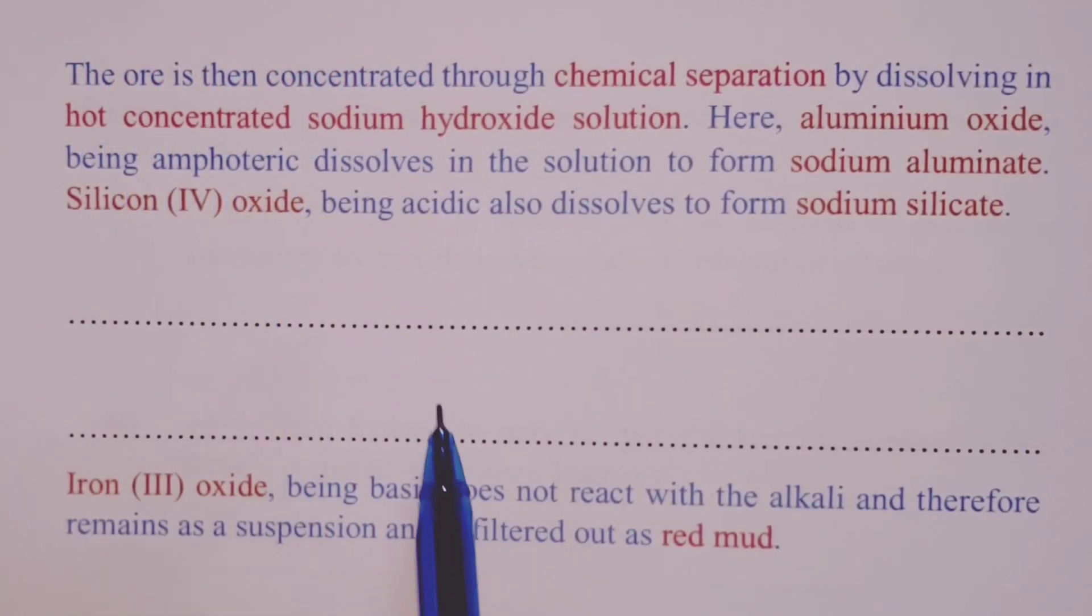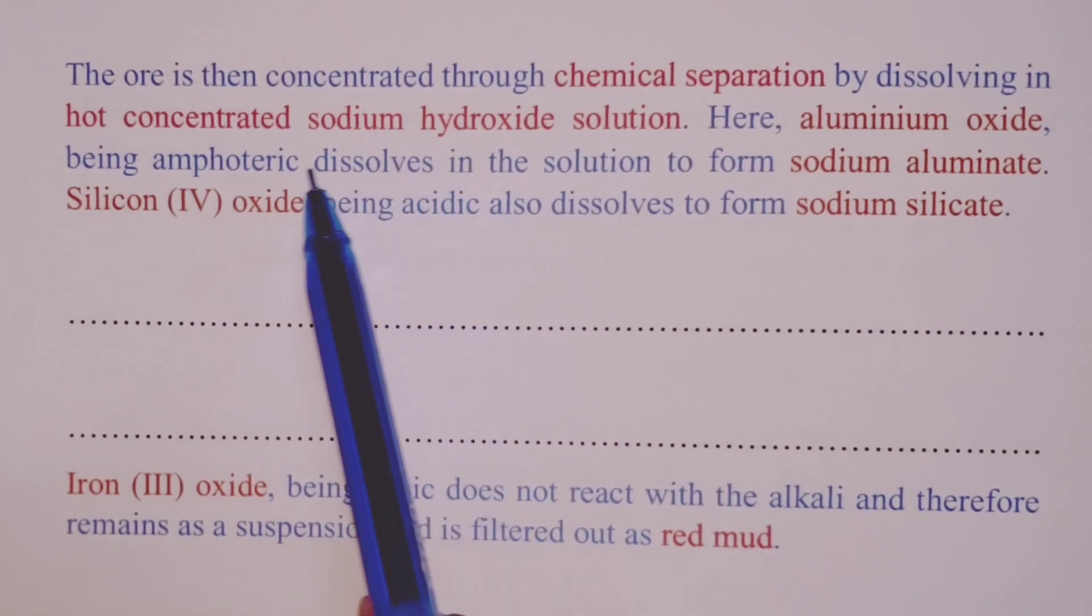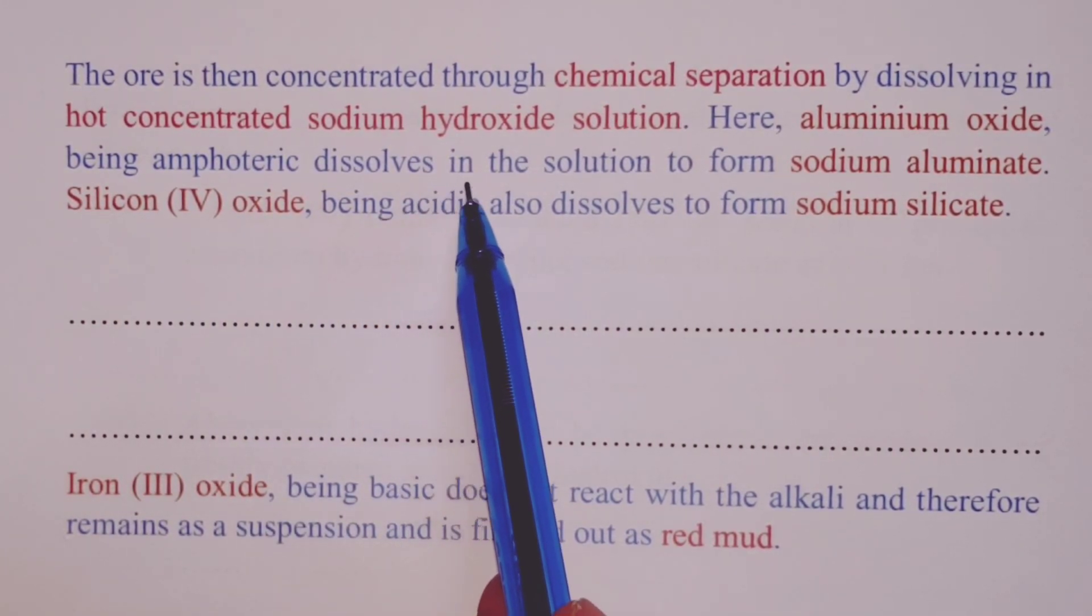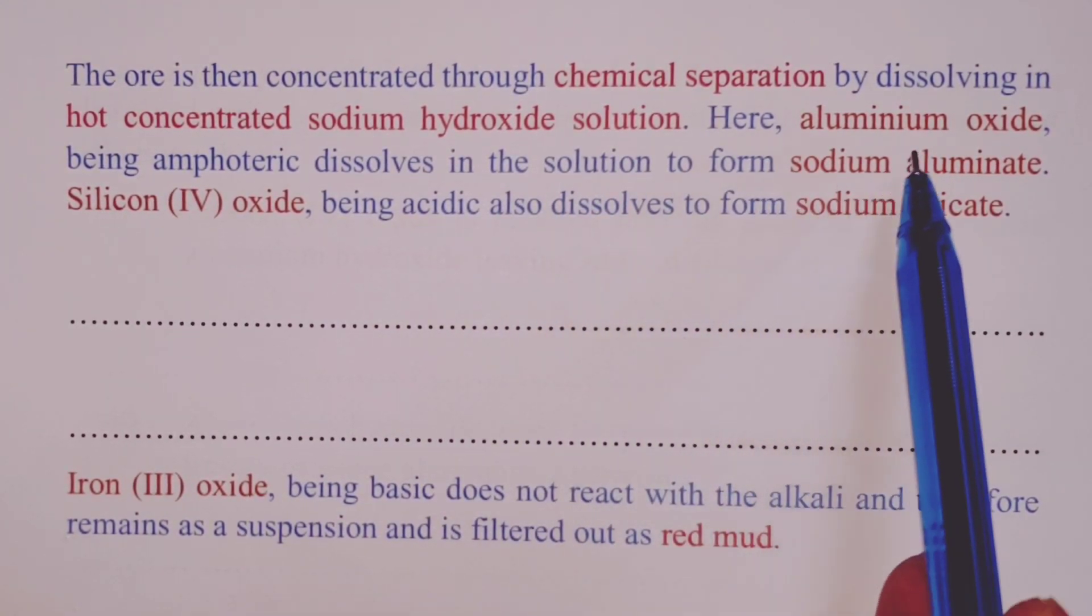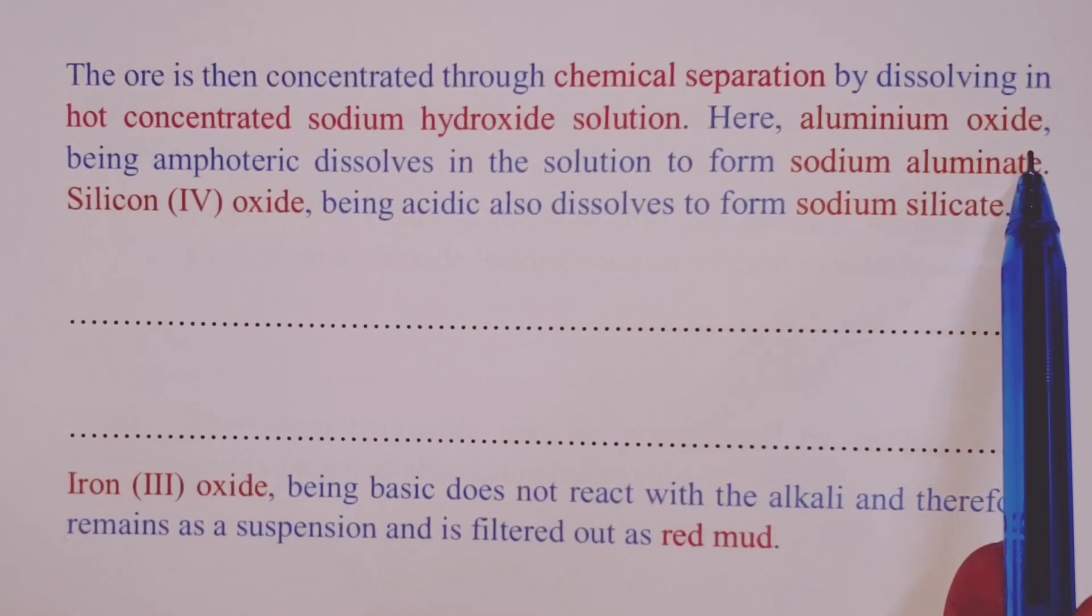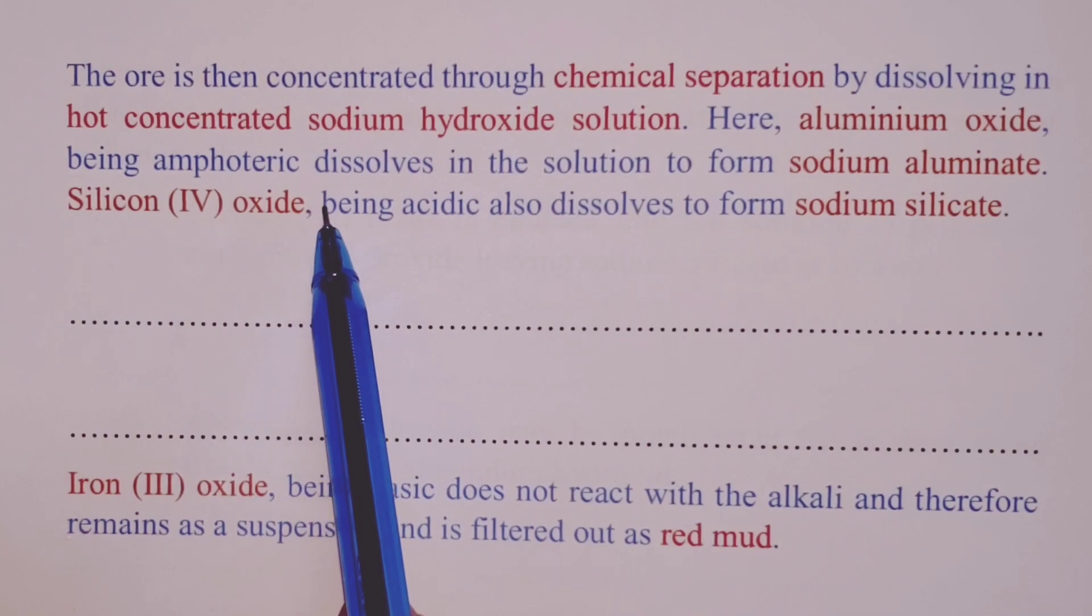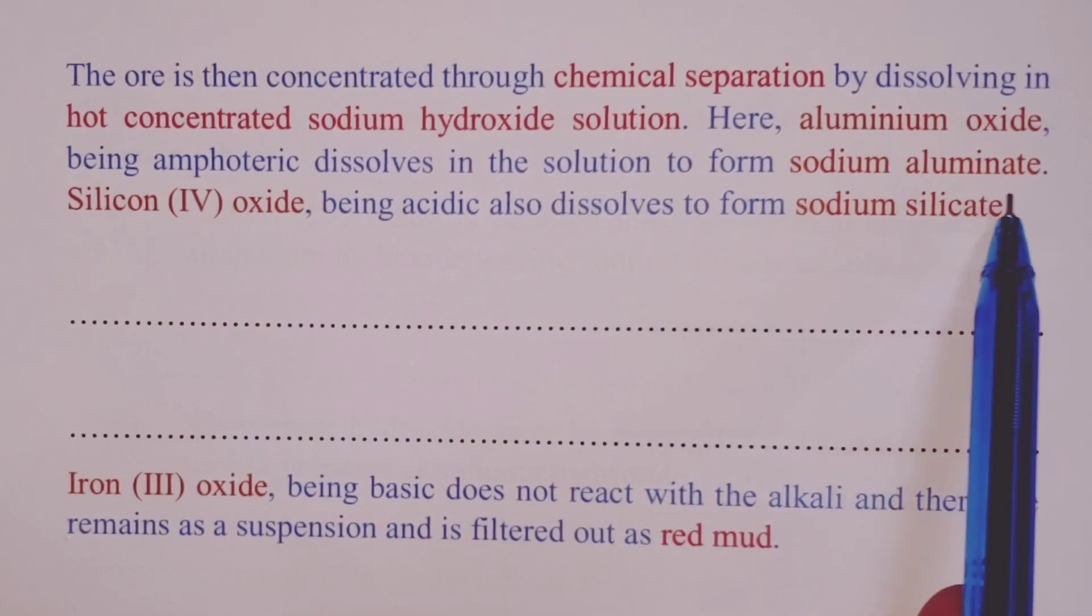After this has been done, the ore is concentrated through chemical separation, where we dissolve it in hot, concentrated sodium hydroxide solution. Here, aluminum oxide, having lost its water of crystallization as indicated in the first procedure, being amphoteric, will dissolve in our alkali to form sodium aluminate.